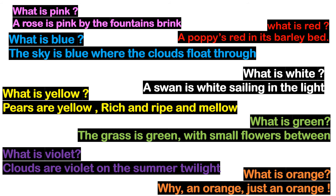Now once again — What is pink? A rose is pink by the fountain's brink. What is red? Poppy is red in its barley bed. What is blue? The sky is blue where the clouds float through. What is white? A swan is white, sailing in the light. What is yellow? Pears are yellow, rich and ripe and mellow. What is green? The grass is green with small flowers between. What is violet? Clouds are violet on the summer twilight. What is orange? Why an orange? Just an orange.